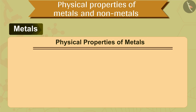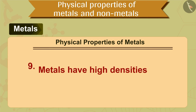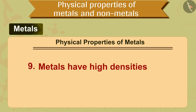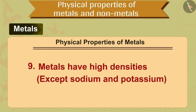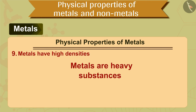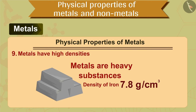The ninth property is that metals have high densities, except sodium and potassium. This means that these metals are heavy substances. For example, the density of iron is 7.8 grams per centimeter cube, which is quite high.